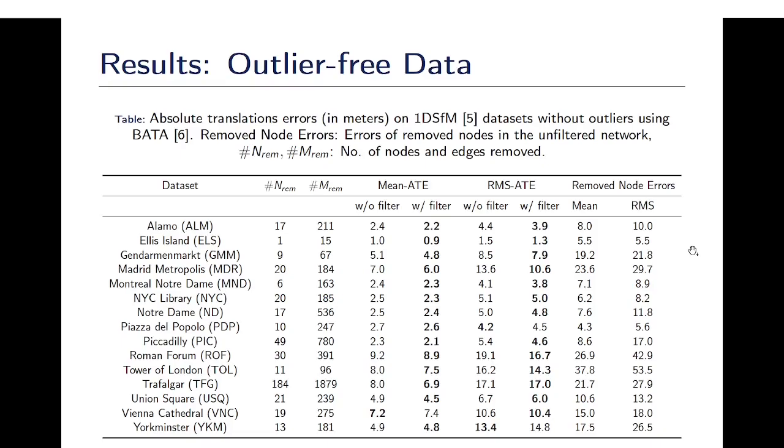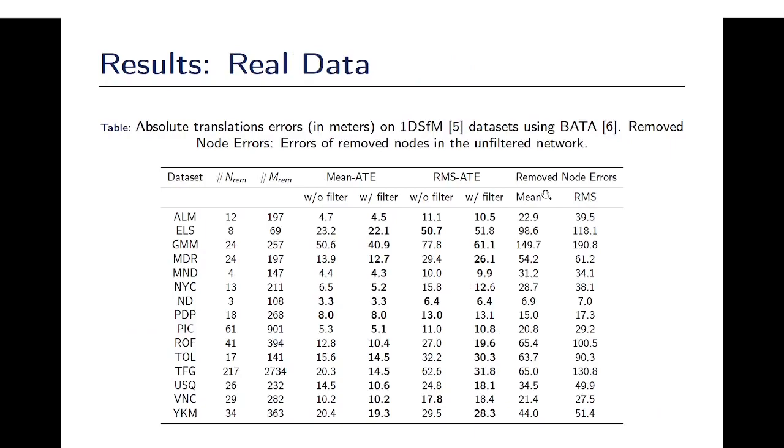Now, we provide results after applying our algorithm. It can be seen that the absolute translations improve significantly in terms of both mean and RMS errors for outlier-free data and also for real data where outliers are present. It can also be seen that the nodes which have been removed due to our filtering process have high errors. This suggests that these nodes have not been estimated properly.